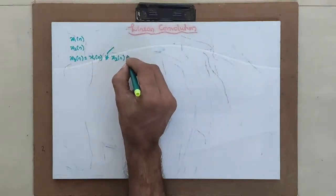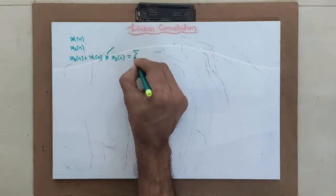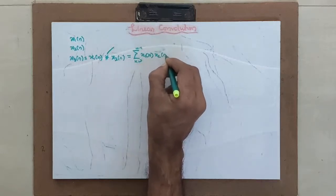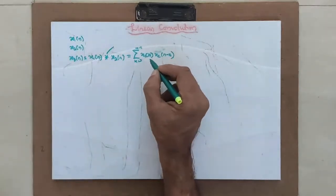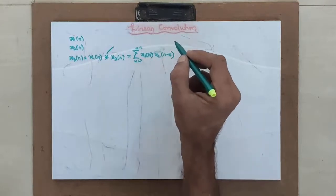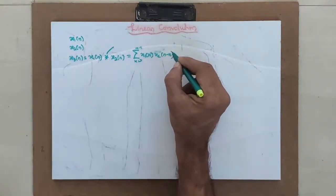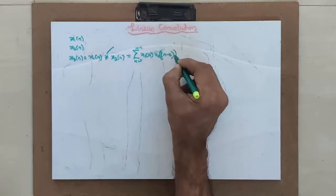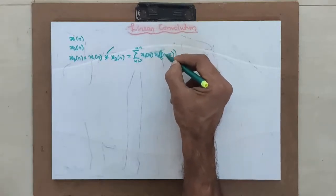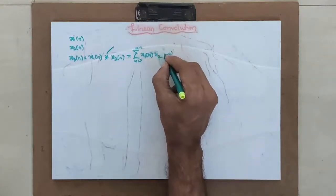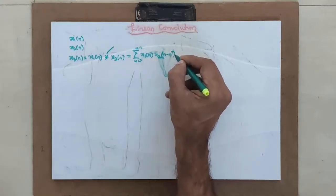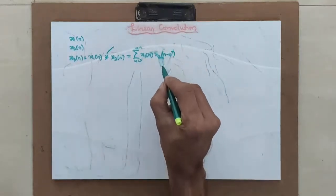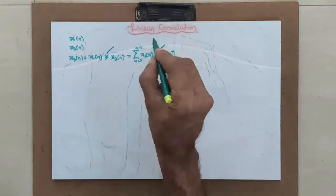Linear convolution you have generally done in signals and systems. It follows this formula: summation k equals 0 to N minus 1 of X1(k) times X2(N minus k). Both formulas, whether circular or linear convolution, are very similar, but there is one difference. In circular convolution the second signal is circularly represented with an additional bracket, whereas in linear convolution the second signal is simply X2(N minus k) — folded and kept in a linear manner.